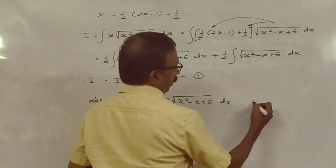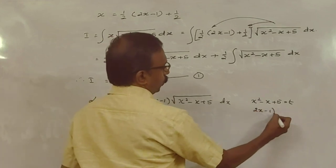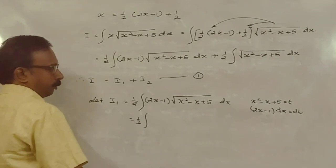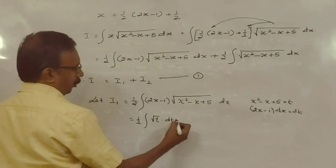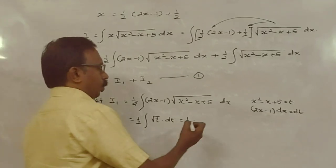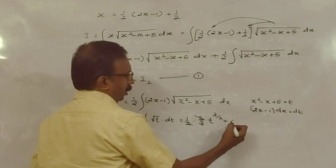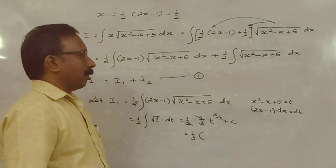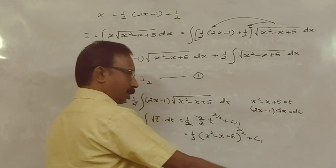Put x² - x + 5 = t. Then (2x - 1) dx = dt. So I1 = (1/2) integral of root(t) dt = (1/2) into (2/3) t^(3/2). The 2s cancel, giving (1/3) into (x² - x + 5)^(3/2) + C1.